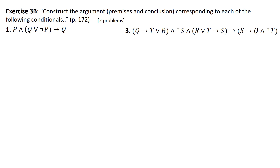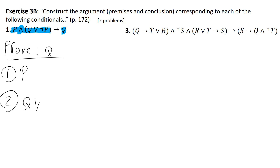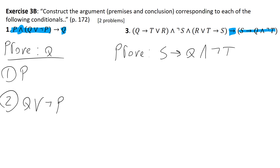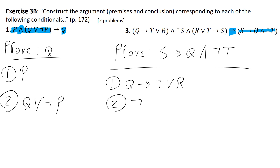For exercise 3B, we're moving in the opposite direction — given the tautological implication, we reconstruct the argument. Number one: Q is the consequent, so it's the conclusion. The antecedent has two premises separated by the AND connective: premise one is P, and premise two is Q or not P — we want to prove Q. For number three, the dominant connective is the if-then. We want to prove if S then Q, and not T. The premises are: first, if Q then (T or R); second, not S; third, if (R or T) then S.